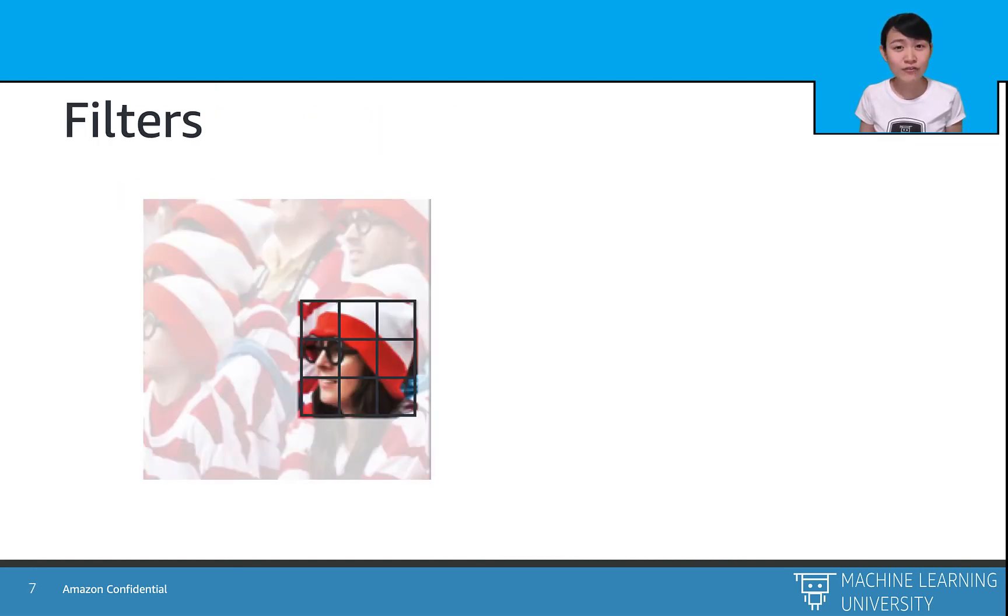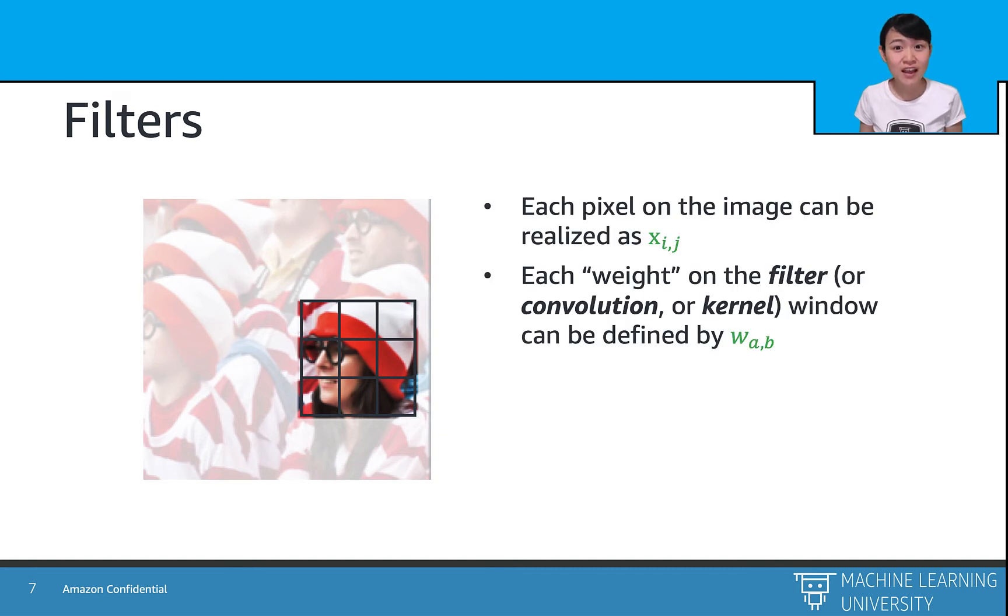So how do we formalize the two intuitions in our vision system? Here are the mathematics behind the scene. We define each pixel as X_ij and each weight parameter as W_ab on the filters, which are the black box over here.